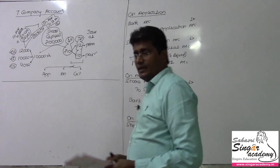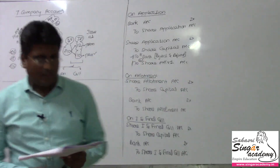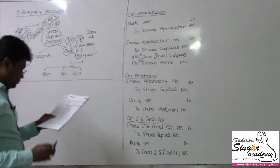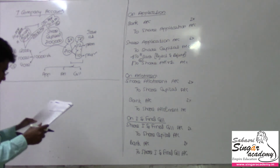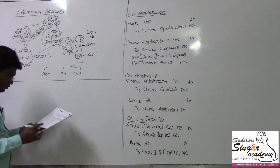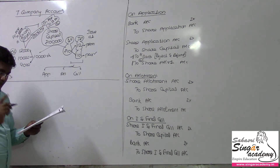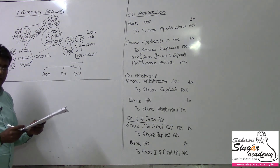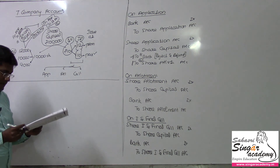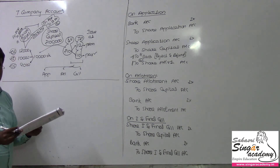Now I am going to discuss illustration number 5. Sudha Limited offered 1 lakh shares of rupees 10 each, payable as 2 rupees on application, 3 rupees on allotment, and the balance when required.